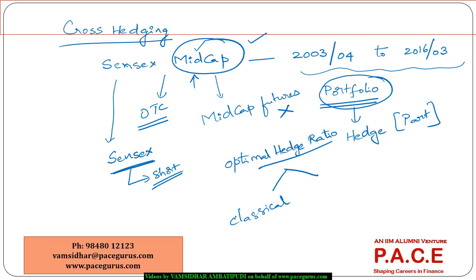This optimal hedge ratio, initially we will look at a classical approach. When I am saying classical approach, I will look at short-term fluctuation. My focus is on short-term fluctuations of both the mid-cap prices and the Sensex prices. The item that I am going to hedge and the asset with which I am going to hedge, both the things, I look at the short-term fluctuations of the prices between both of them.